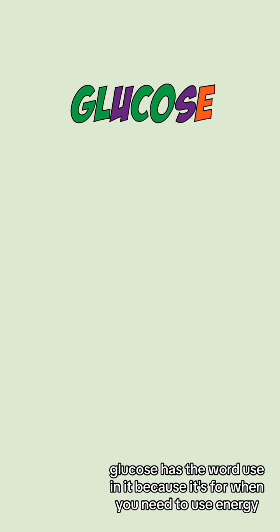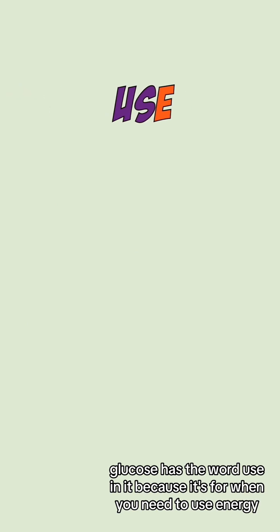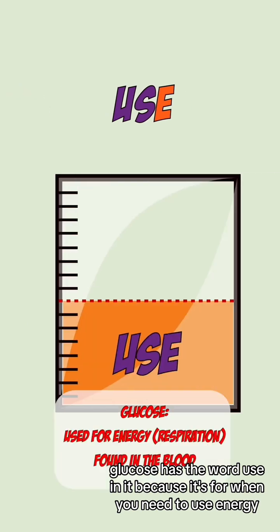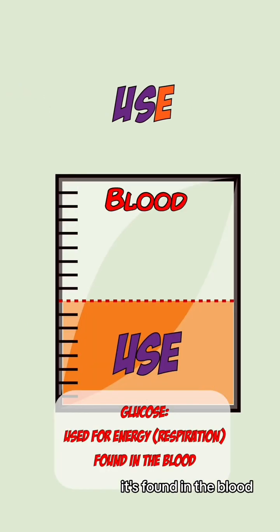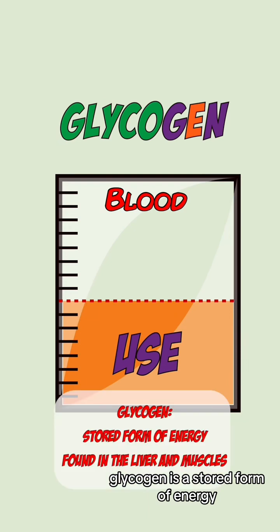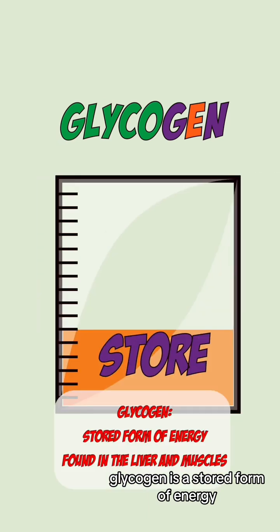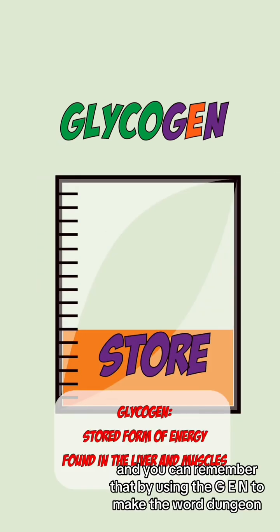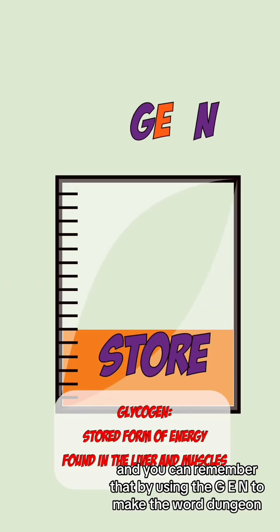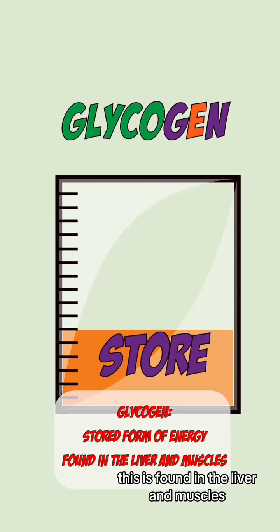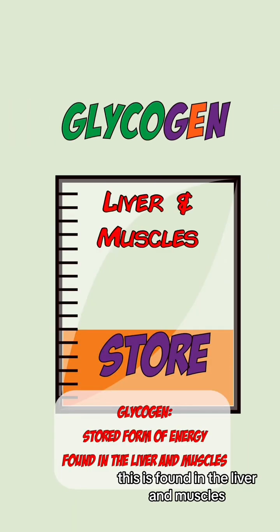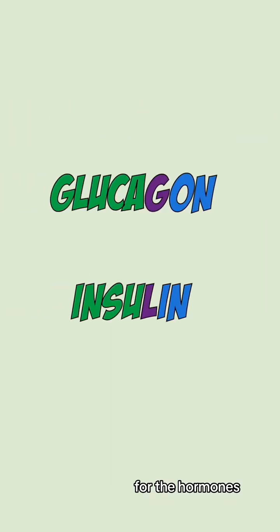Glucose has the word 'use' in it because it's for when you need to use energy, and it's found in the blood. Glycogen is a stored form of energy, and you can remember that by using the 'gen' to make the word dungeon, which also stores things. This is found in the liver and muscles.